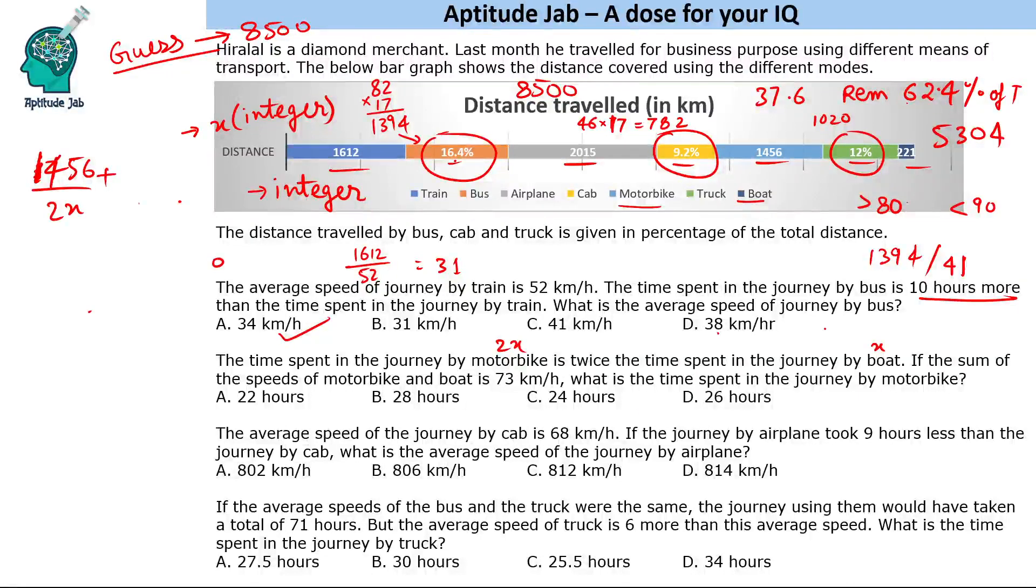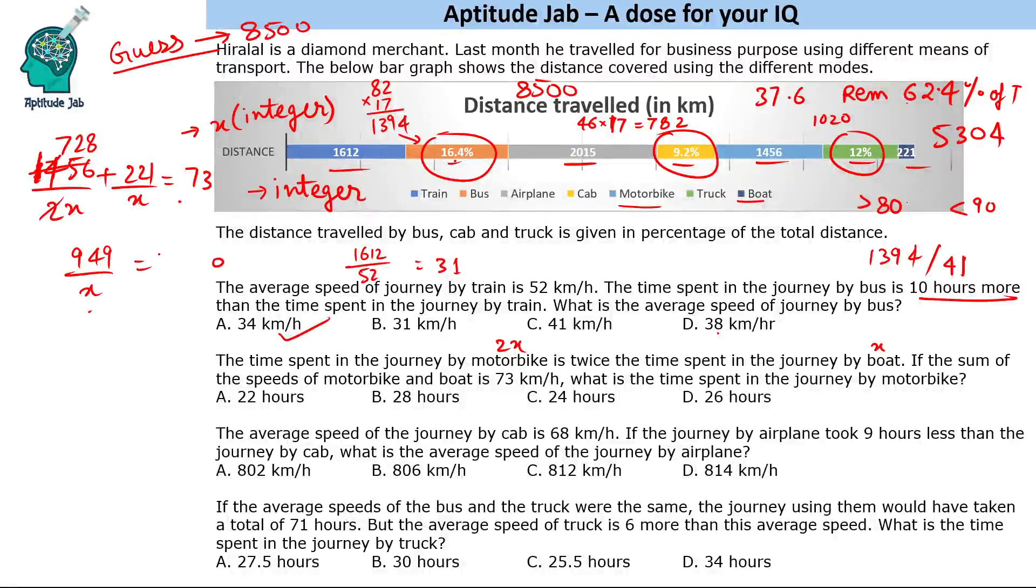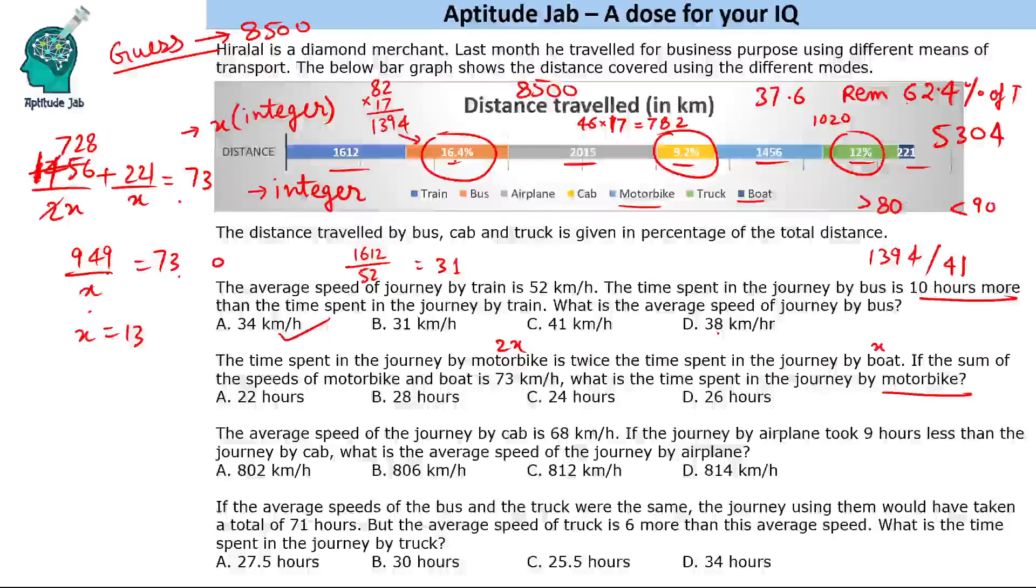Plus, the time spent by boat is x and the distance covered is 221. So 221 by x is equal to 73. If you get this, this will be 728, so that will be 949 by x is 73. So now we have to find the time spent in the journey by motorbike, so we have to find 2x. So again by using that logic we get that x is equal to 13, because if I see 9 and 3.